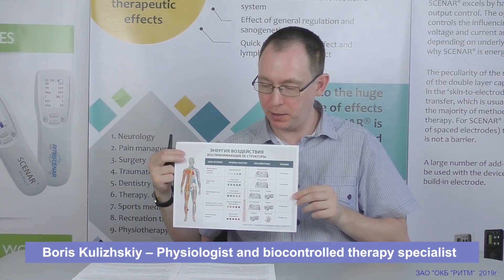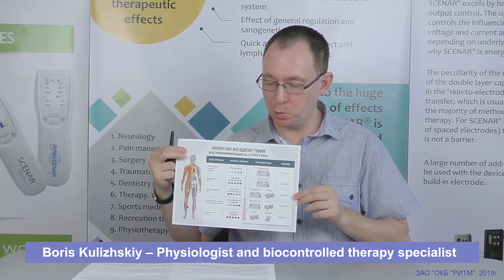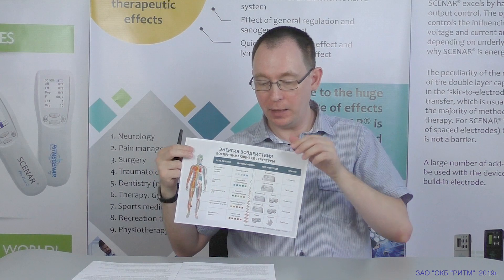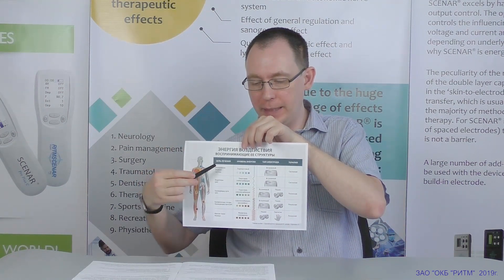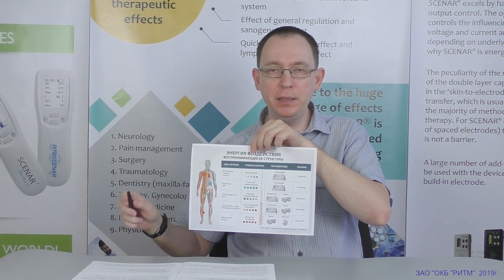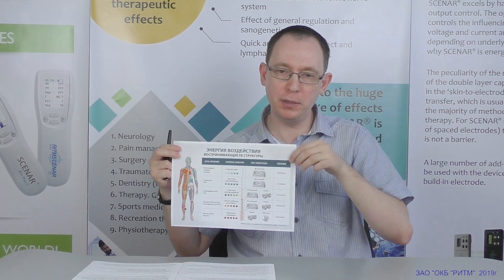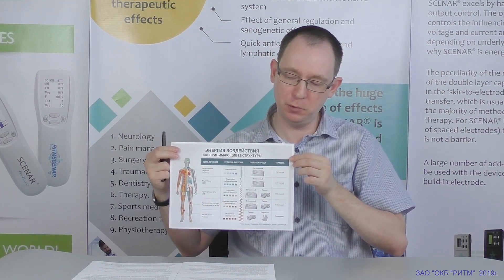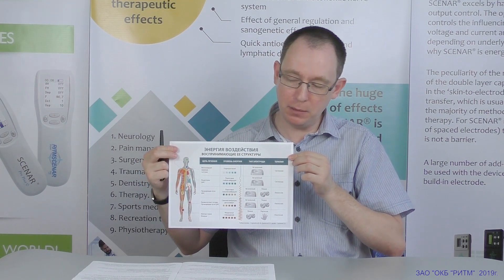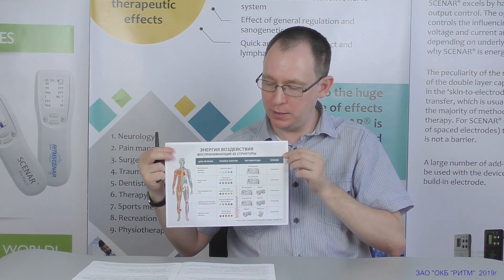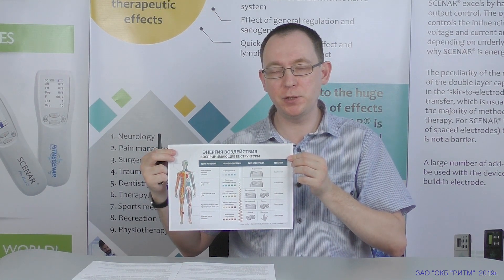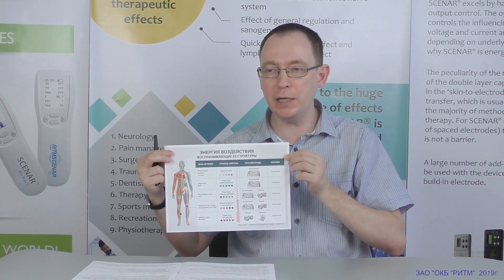Treatment energy and receptive body structures. At the sub-threshold energy level, the main target of the scanner is the autonomous nervous system. We can objectively see the body's reaction to a basically non-sensible influence.